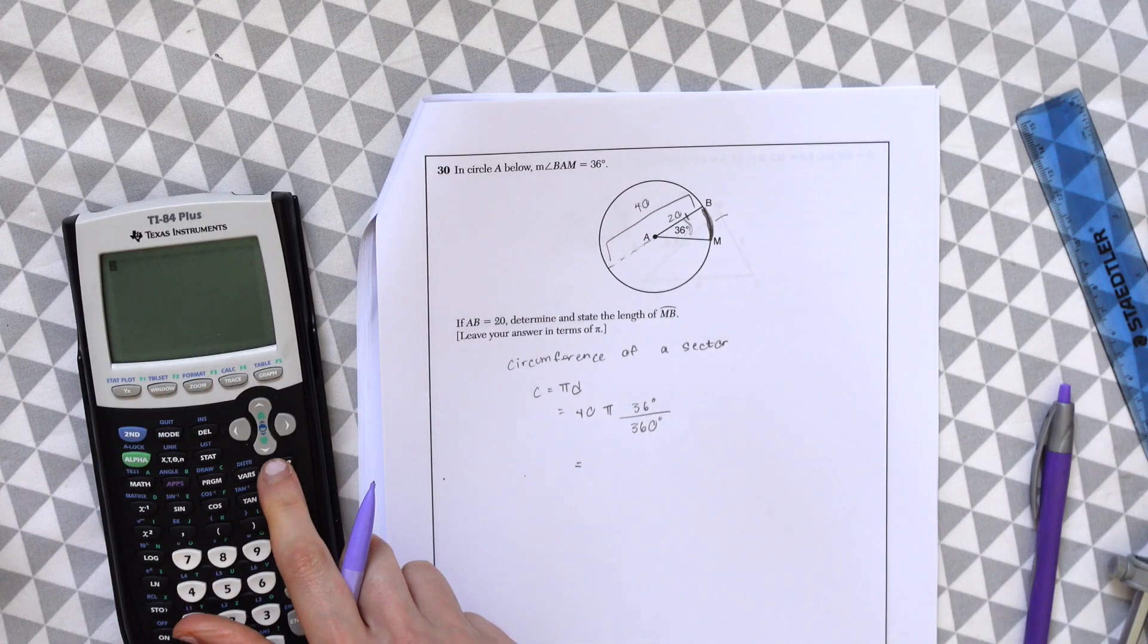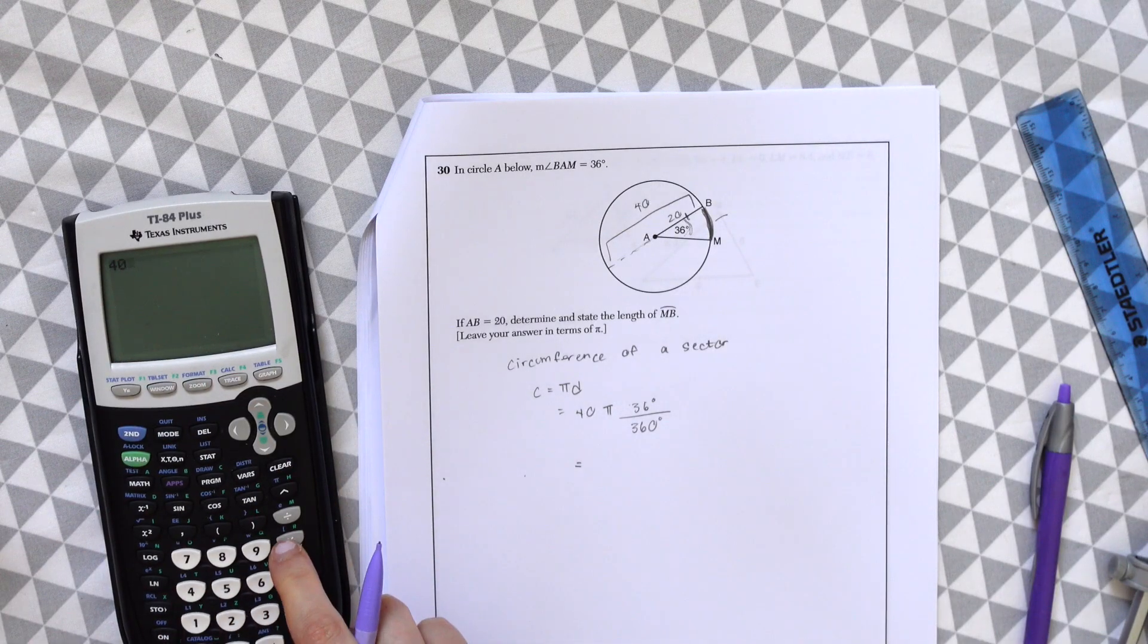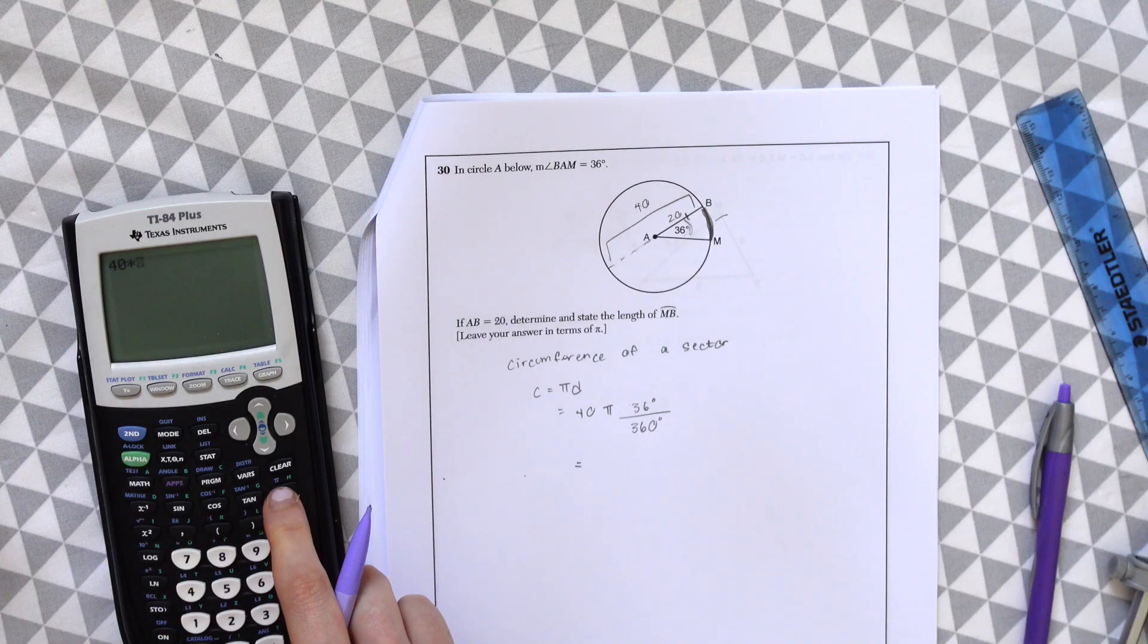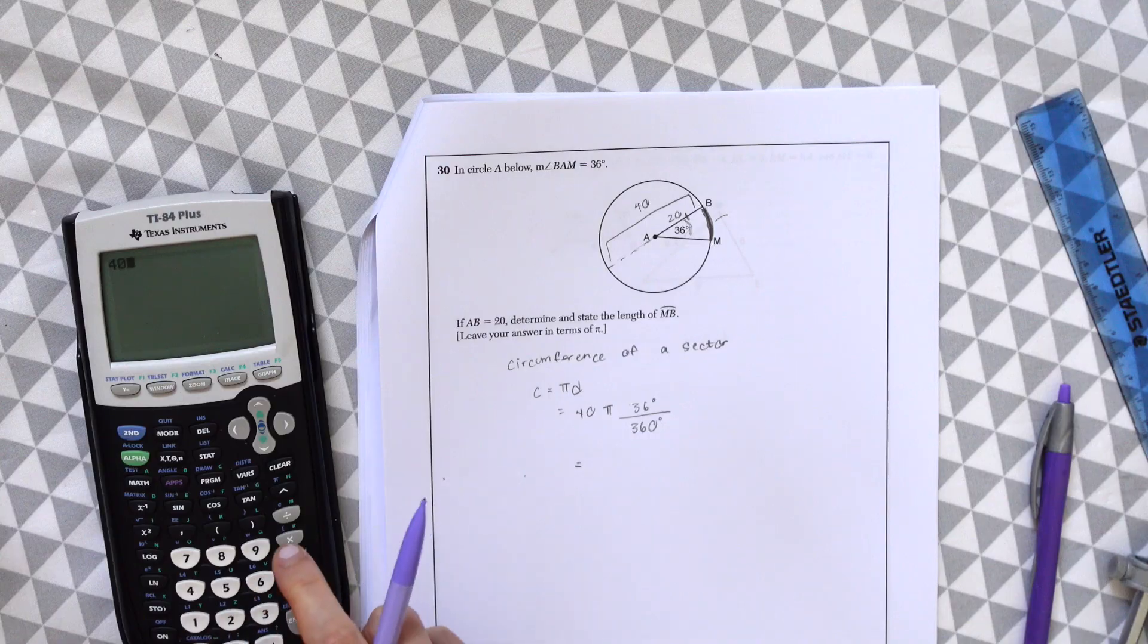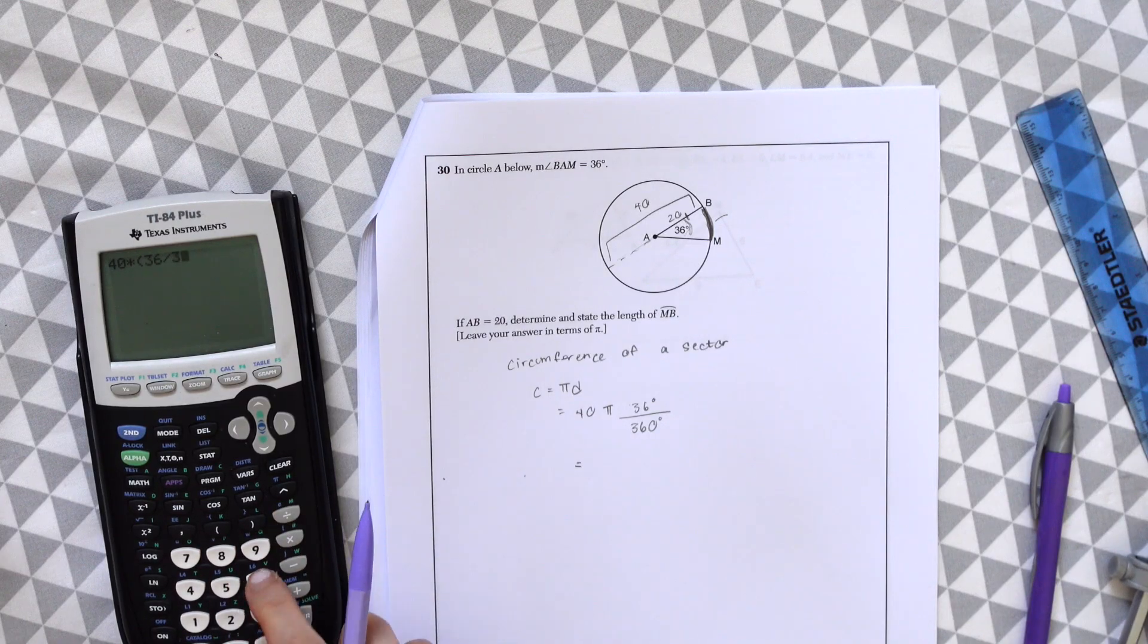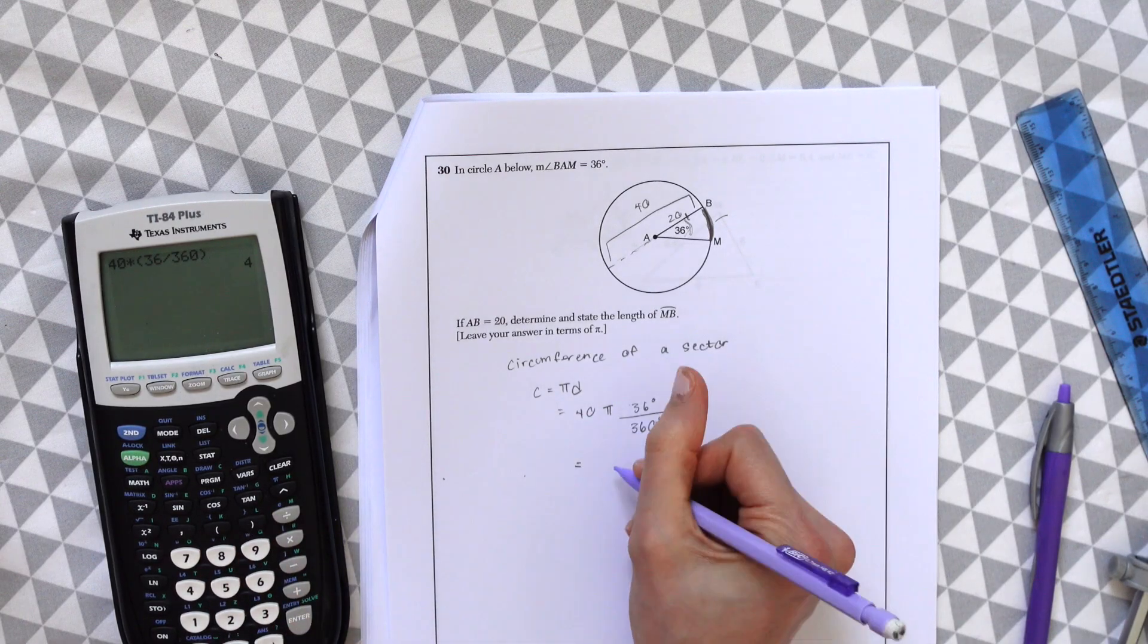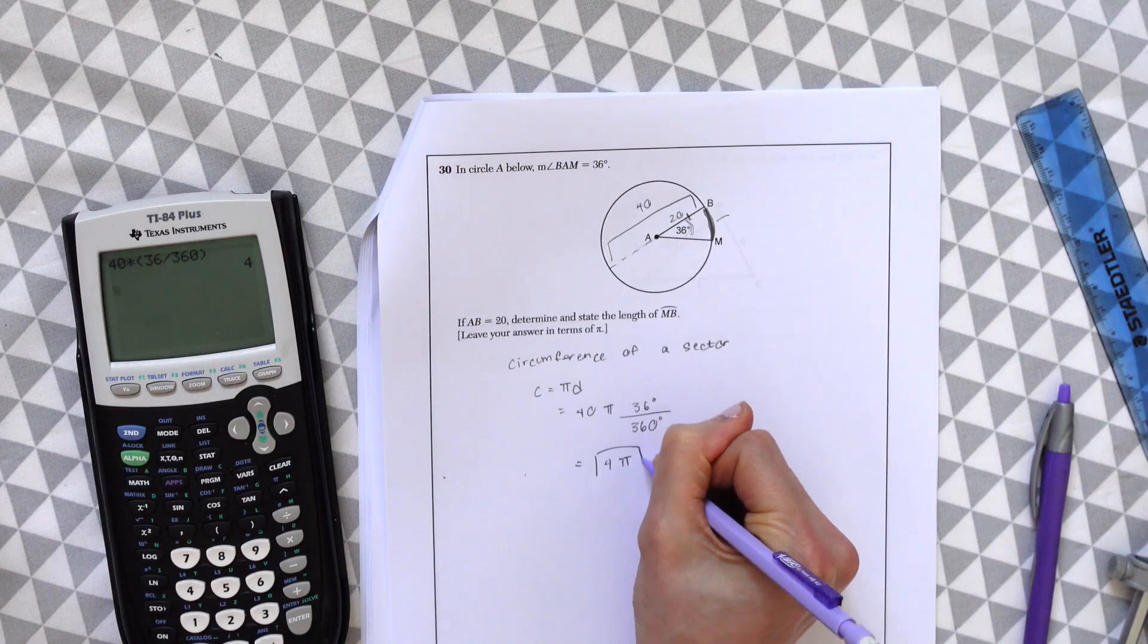So now we just need to calculate this all together. So we have 40 times pi. Oh, it says leave it in terms of pi. So actually we could just do 40 times 36 divided by 360, and we get 4 pi. And that's our answer.